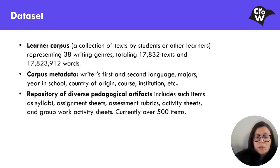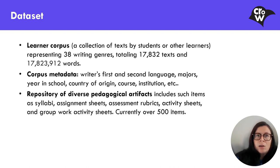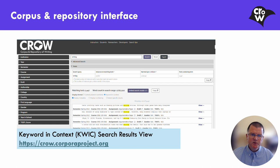On the other hand, we have the repository of diverse pedagogical artifacts. You can find items such as syllabi, assignment sheets, assessment rubrics, and activity sheets — and right now there are over 500 items in the repository. Interestingly, some of these items are linked to items in the corpus, so you can look at an assignment prompt and see texts that were written in response to that particular prompt. Here's a screenshot showing the web interface for Crow, specifically the search function. You can see the list of metadata filters at the left. Search results are displayed using the keywords-in-context approach familiar to corpus linguistics researchers, with results centered and bracketed by surrounding text.